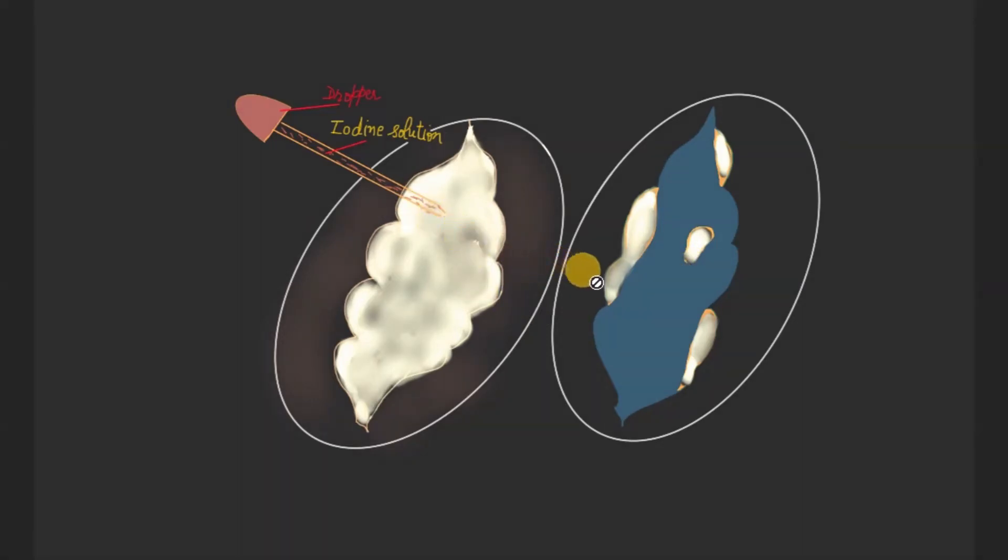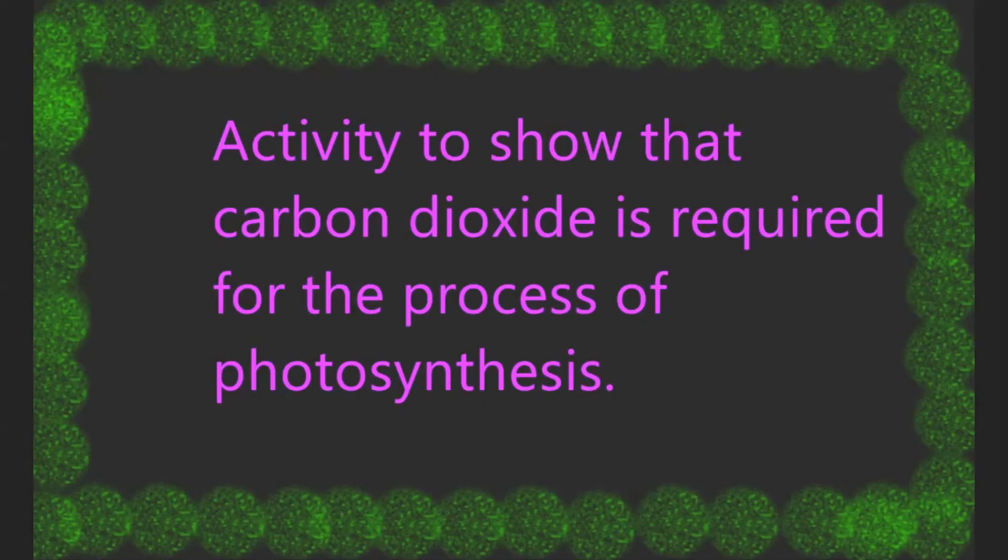Because starch has been formed in these parts of the plant. So when we add iodine on a plant part, if it turns bluish black it means starch is present. So it shows that chlorophyll is required for the process of photosynthesis.